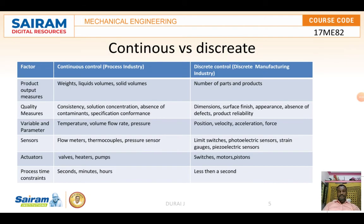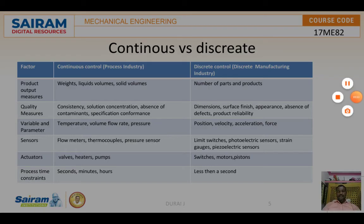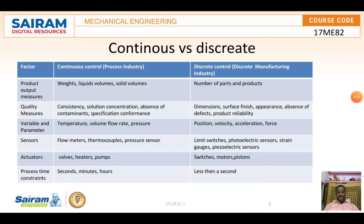Now we come to continuous and discrete control. There are two types of control: continuous control and discrete control. In continuous control, the variable parameters are continuous and analog. In discrete control, variables and parameters are discrete, mostly in binary format.